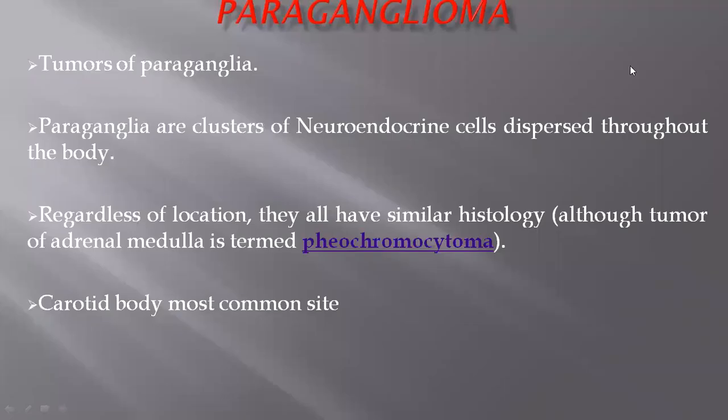Welcome to my YouTube channel. Today we will discuss paraganglioma. Paraganglioma is the tumor of paraganglia, which are clusters of neuroendocrine cells dispersed throughout the body. Embryologically, they arise from the neural crest cells, regardless of their location — from foregut up to the hindgut — and they all have a similar type of histology, which we will discuss further, about the type 1 and type 2 cells.